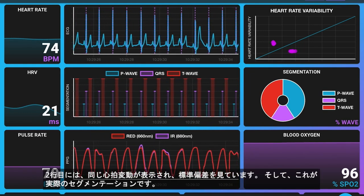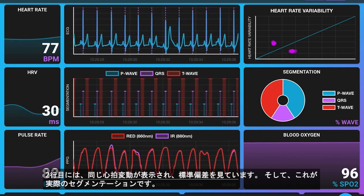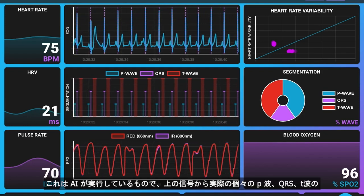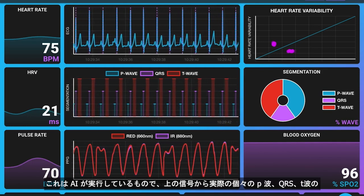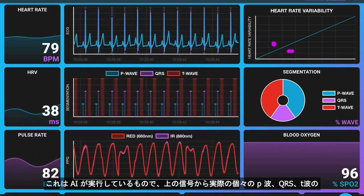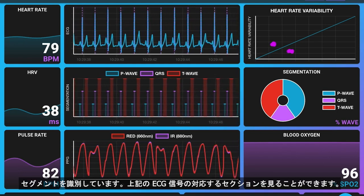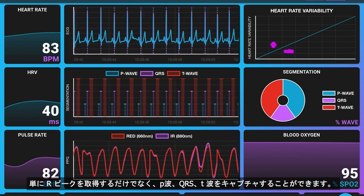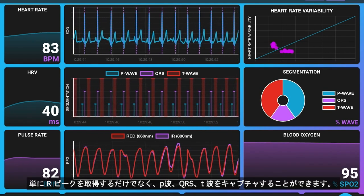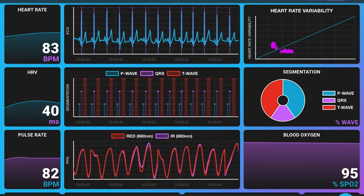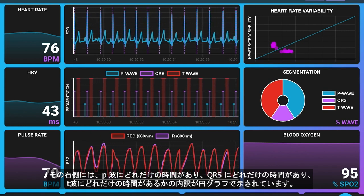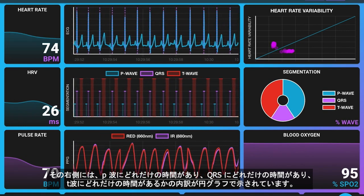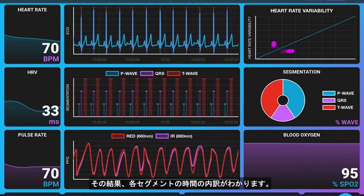On the second row, we're showing the heart rate variability looking at the standard deviation. And then we have the actual segmentation — this is the AI actually running, identifying from the ECG signal the individual P-wave, QRS, and T-wave segments. You can see the corresponding sections with the ECG signal above. It's able to capture the P-wave, the QRS, and the T-wave, not just simply getting the arc peaks. To the right, we show a breakdown in a pie diagram of how much time was in the P-wave, how much was in the QRS, and how much was in the T-wave.